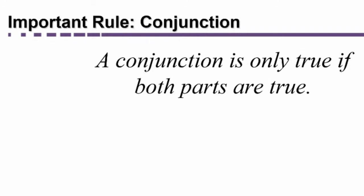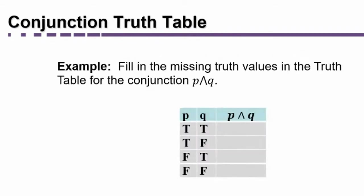This is a rule you're going to need to memorize. There are a few rules in this chapter that are necessary for you to be successful on the test. If you don't know these few rules, then everything else is going to be impossible, and this is one of them. However you're taking notes, making flashcards — this needs to be in there, highlighted with a big star. A conjunction is only true if both parts are true.